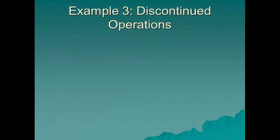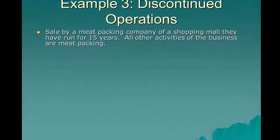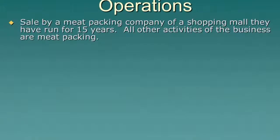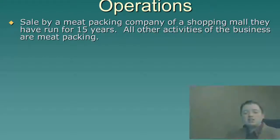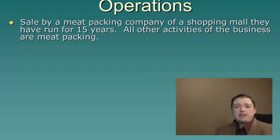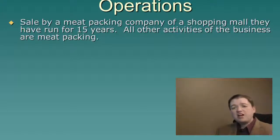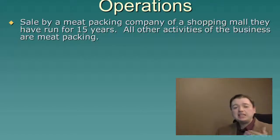First example: a meatpacking company that has also managed a shopping mall for the last 15 years has decided to sell it off and get rid of it. Since everything else this company does is meatpacking and they have nothing else in shopping malls, selling off this shopping mall line would be a discontinued operation. Everything they do now is meatpacking — they have completely left that line of business.